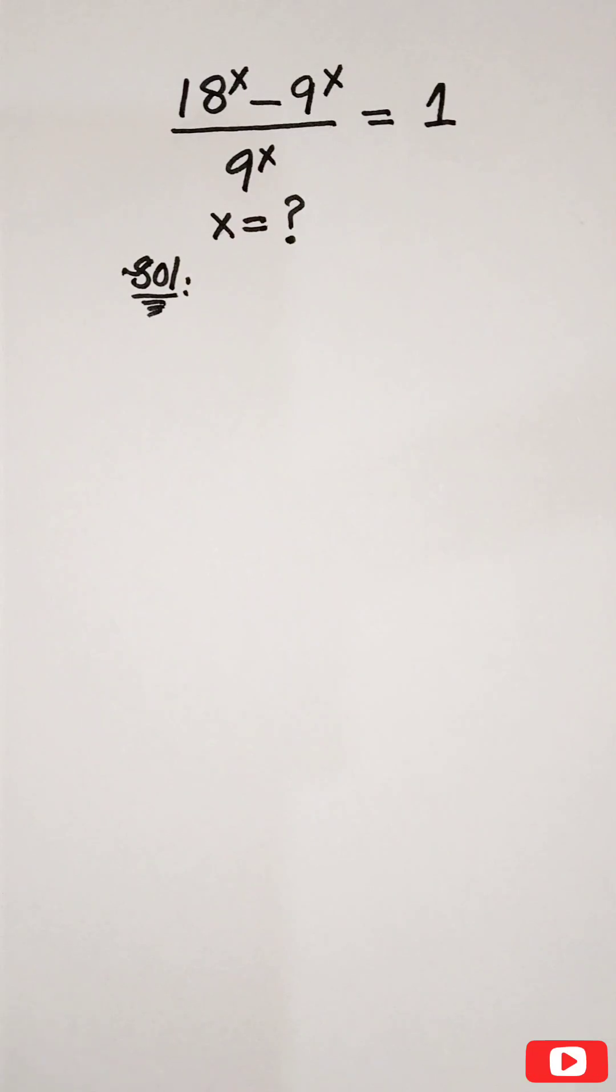18 to the power x minus 9 to the power x, whole divided by 9 to the power x, equals 1. How to solve this question for x?